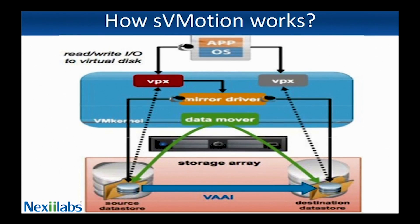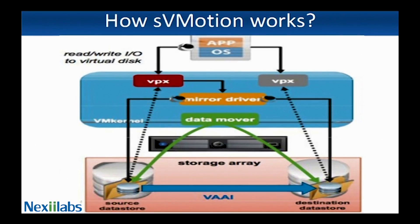The mirror driver measures writes of already-copied blocks to the destination. The I/O mirroring process transports any additional changes that occur to the virtual disk because of the guest's ongoing modifications. Storage vMotion mirrors I/O only to the disk region that has already been copied by the bulk copy process. Writes to a disk region that the bulk copy process has not yet copied are not mirrored, because changes to this region will be copied by the bulk copy process anyway.